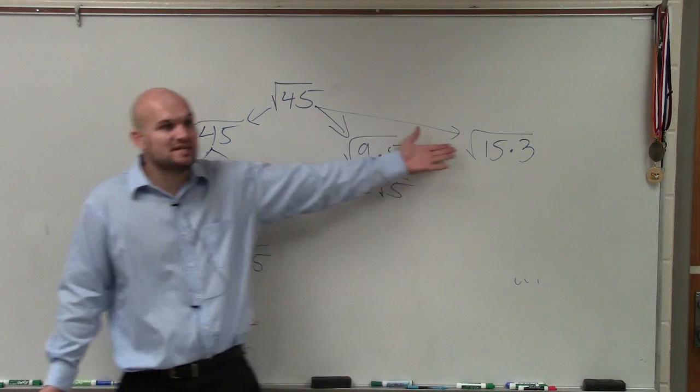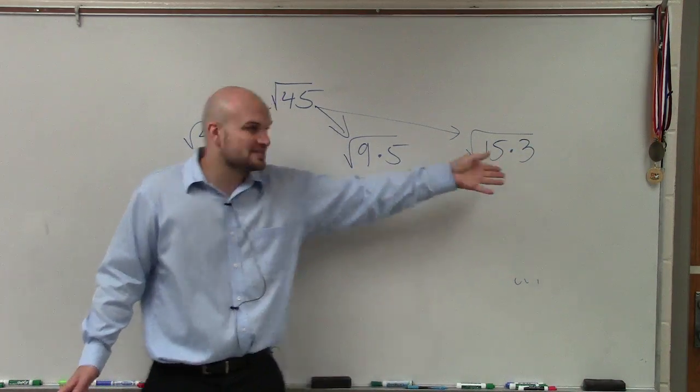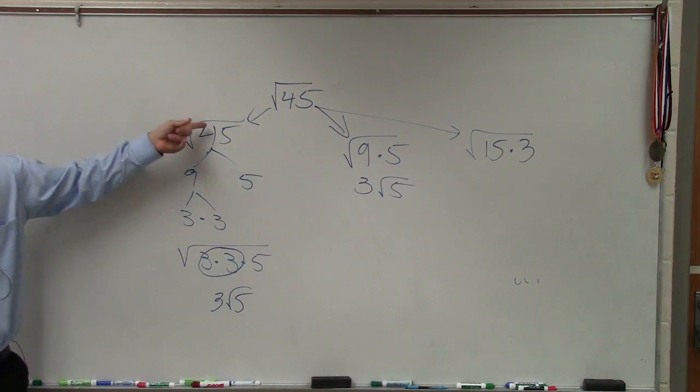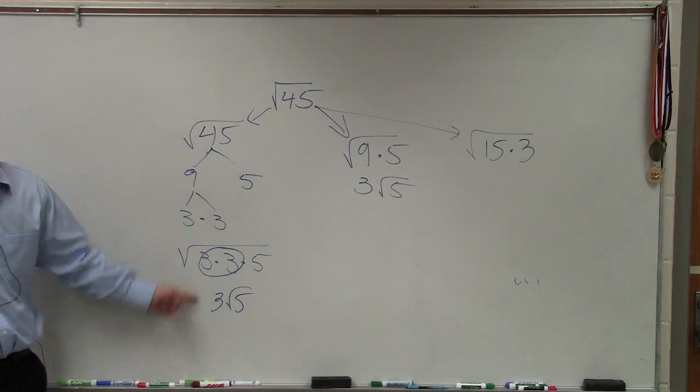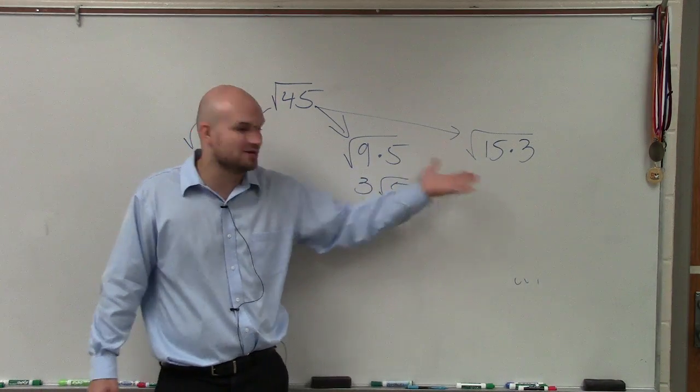The problem with 15 times 3 is this is not a square number, nor is this a square number. Yeah, you could still do 15 times 3, but you'd have to go back to prime factorization. But don't try to do this method by breaking up into 15 times 3.